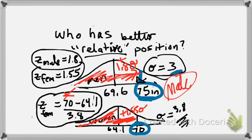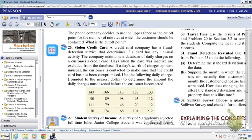Okay, now the next thing we're going to start looking at is box plots and outliers. For this next problem that I'm going to do with you, I'll star it here. It's called stolen credit card. A credit card company has a fraud detection service that determines if a card has any unusual activity. The company maintains a database of daily charges on a customer's credit card. Days when the card was inactive are excluded from the database. If a day's worth of charges appears unusual, the customer is contacted to make sure the credit card has not been compromised.